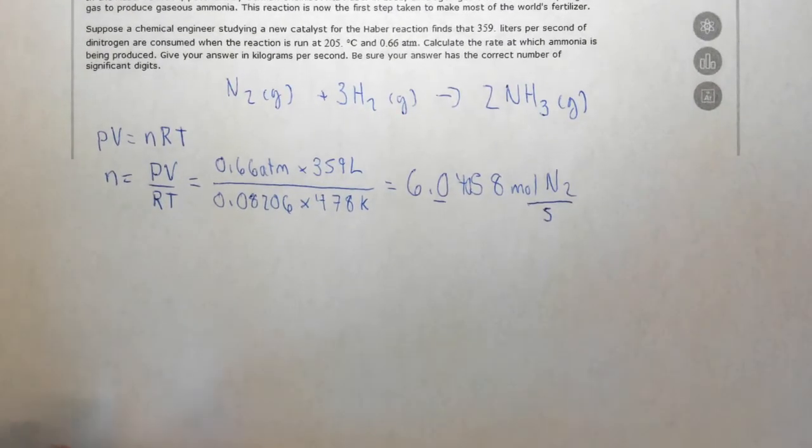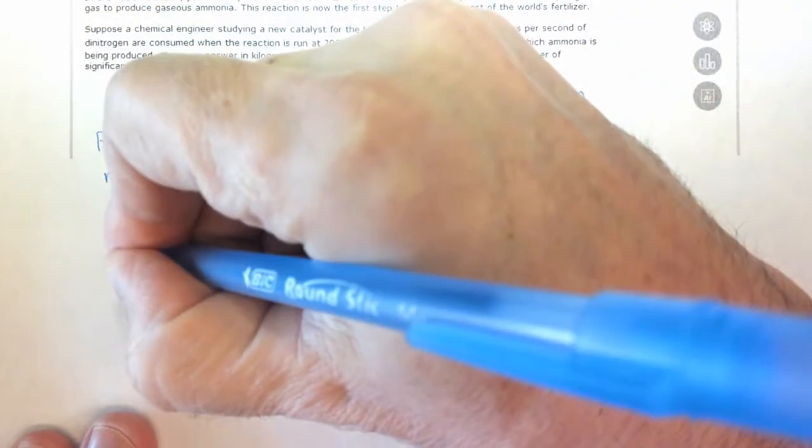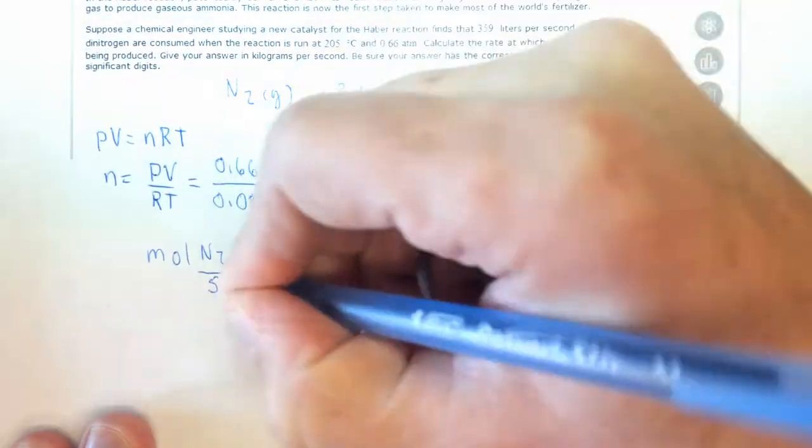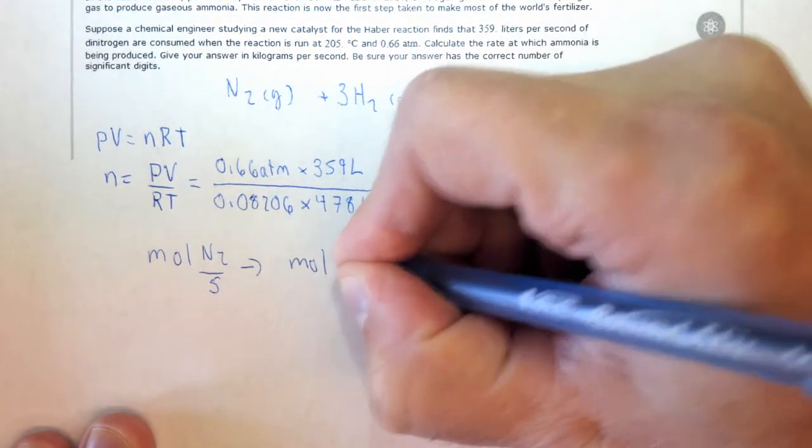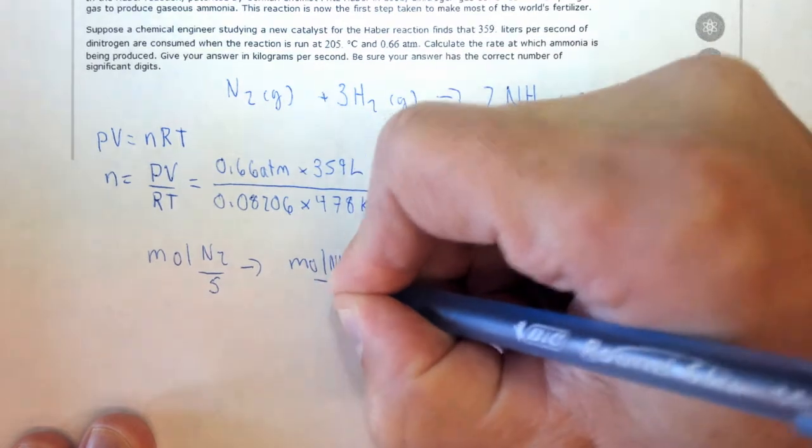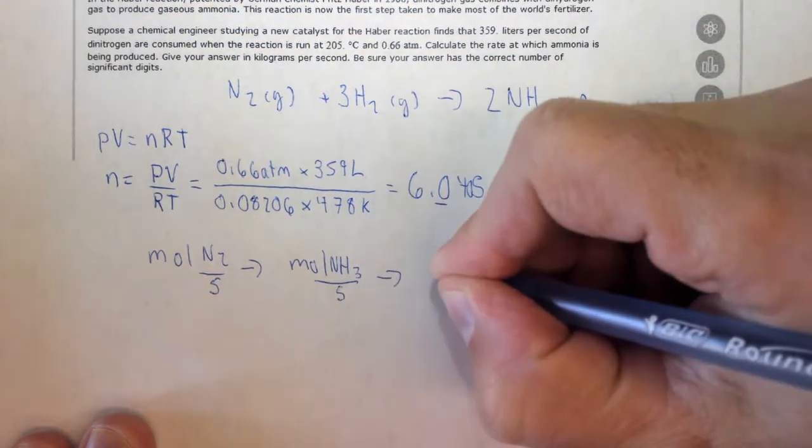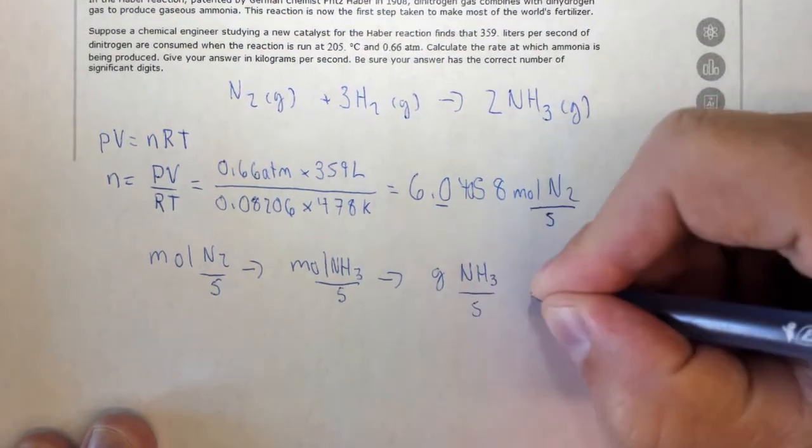So this is basically a dimensional analysis problem. We're starting with moles of nitrogen per second, but again it just goes along for the ride, to moles of ammonia per second, to grams of ammonia per second,